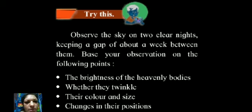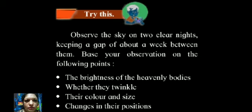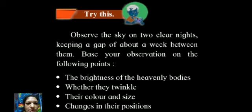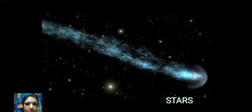Now try this activity: observe the sky on two clear nights, keeping a gap of about a week between them. Base your observation on the following points — the brightness of the heavenly bodies, whether they twinkle, their color and size, and changes in their positions. Note it all down.